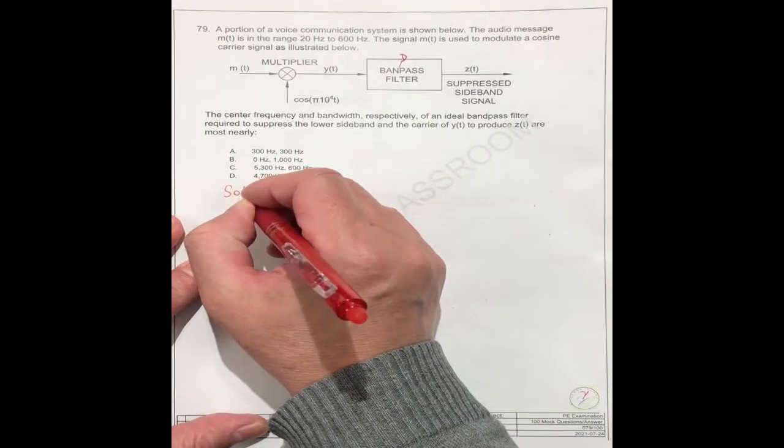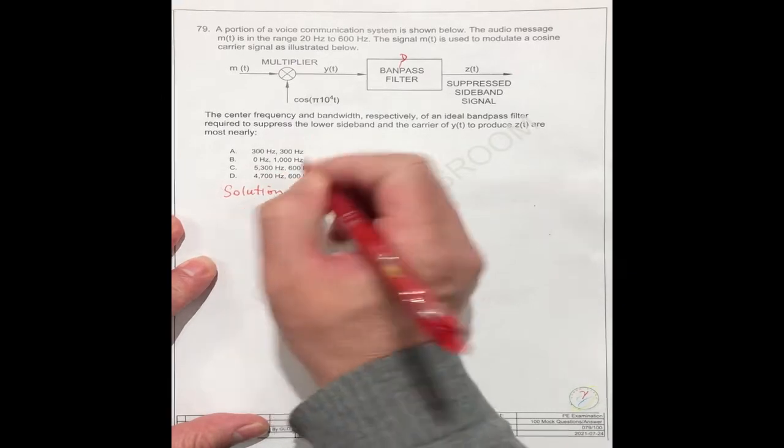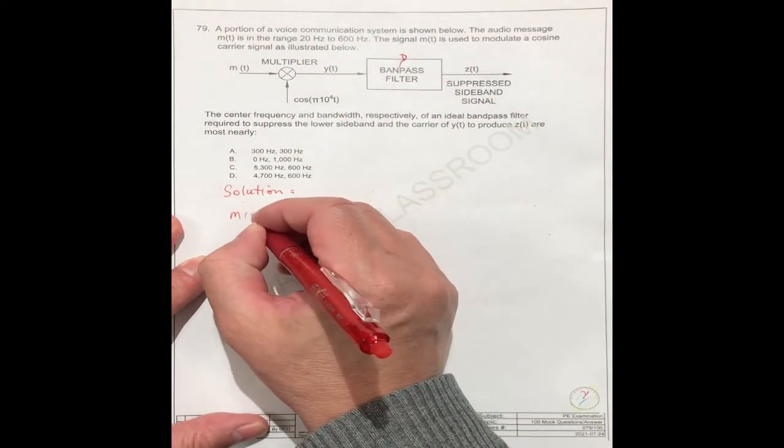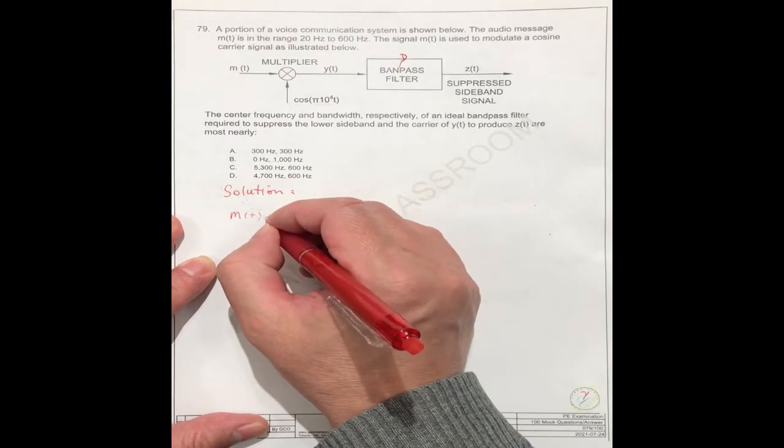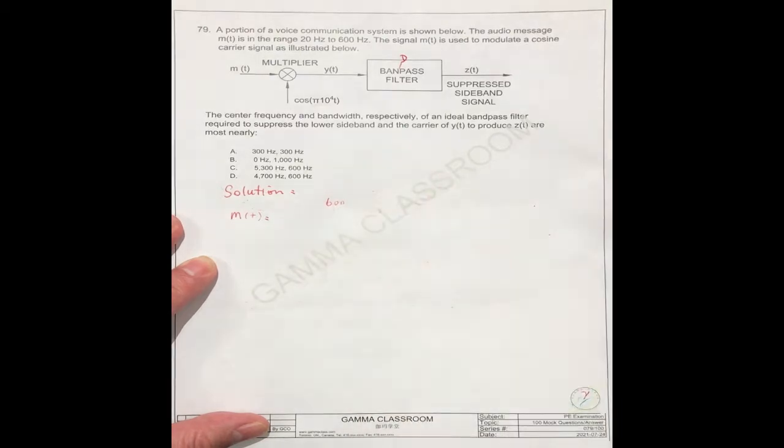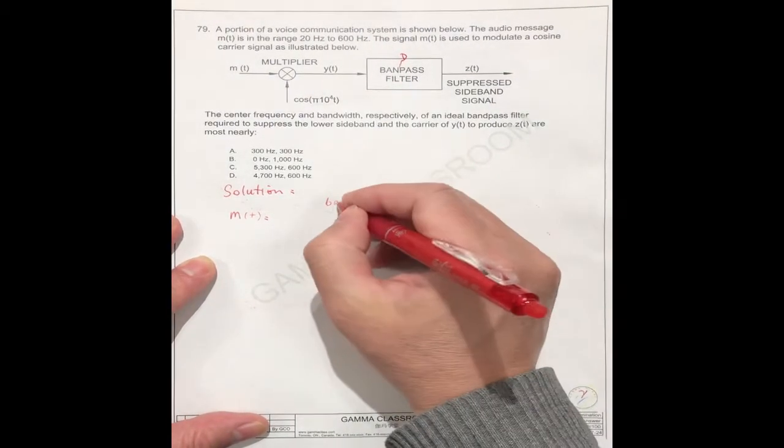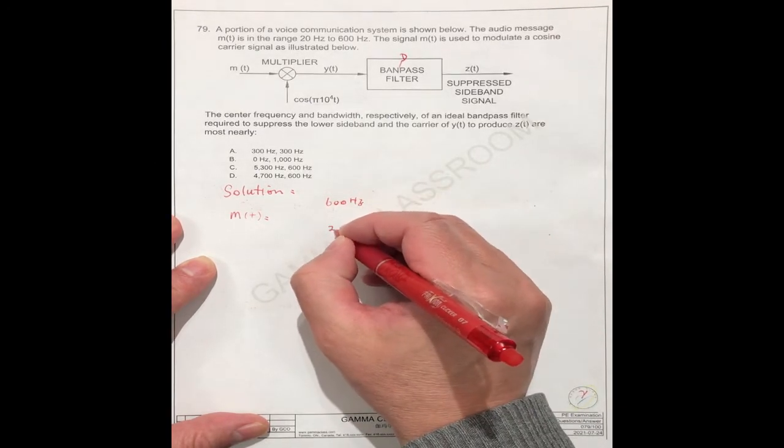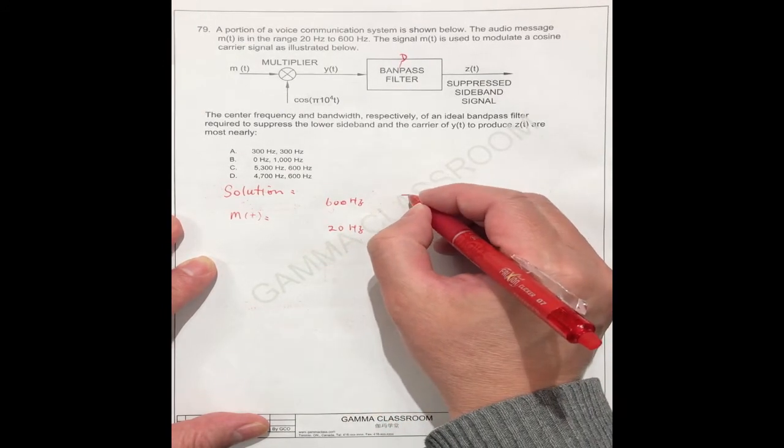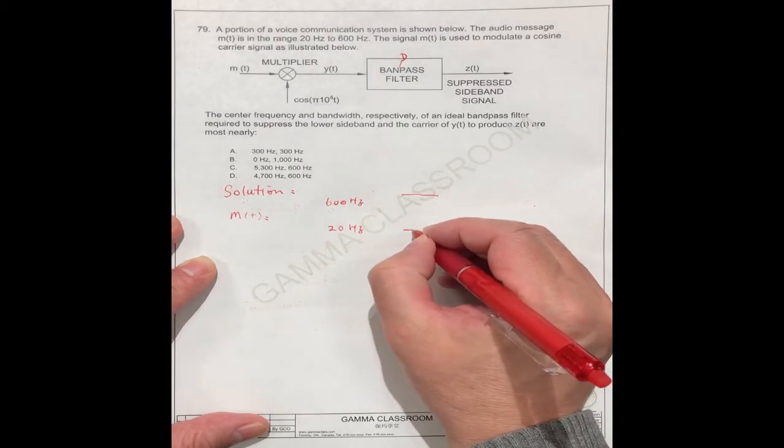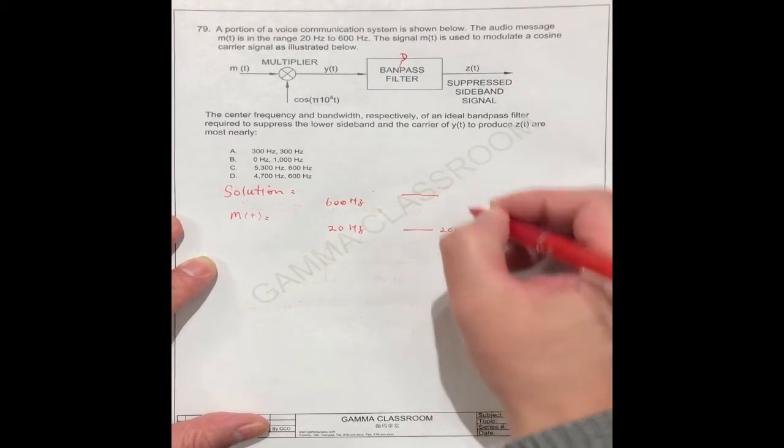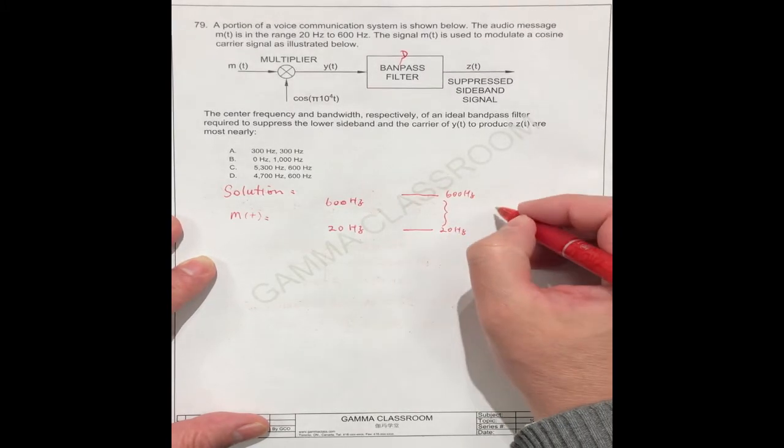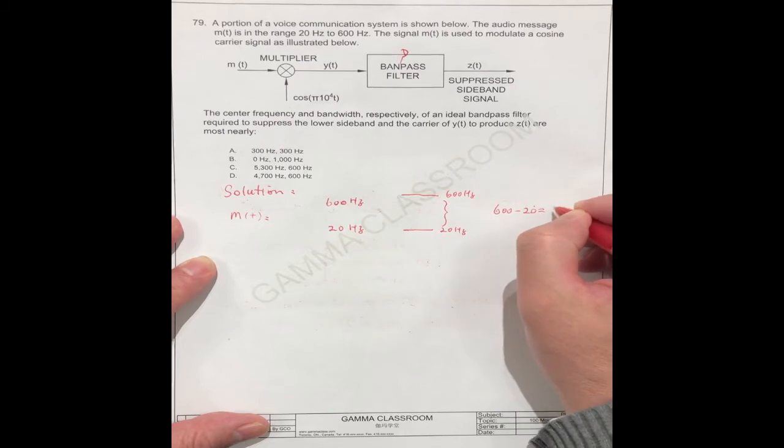So for the solution, the first, the message is 20 to 600. So this MT has the maximum 600 and the lower one is 20 hertz. We can do the diagram here. This is 600, this is 20 hertz. So this range is 600 minus 20 equals 580.